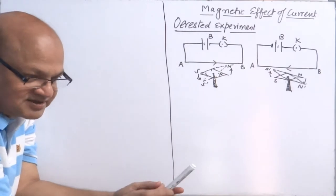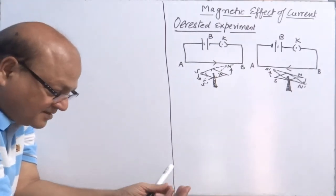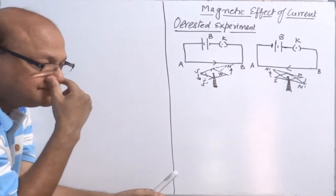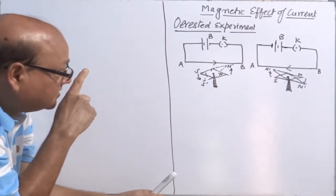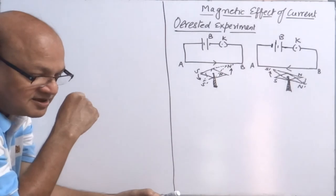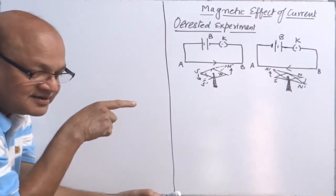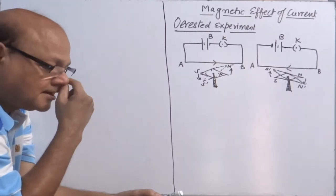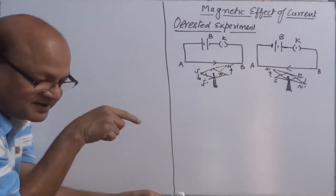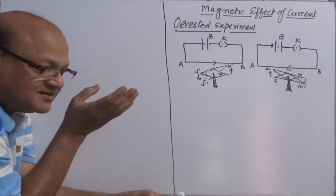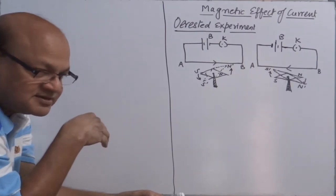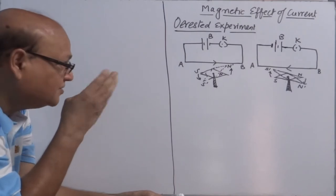That's how he concluded that every current-carrying conductor produces a magnetic field around it. That's why this effect is termed the magnetic effect of current. It is another nature of a current-carrying conductor — the moment a conductor carries current, it produces a magnetic field around it. This is a second effect; another effect you have seen earlier in current electricity was the heating effect of current.